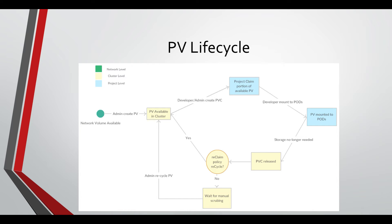Once you have this claim available in your project, you define the mapping by either defining a binding file for a single pod and running it, or by updating the deployment configuration to make this volume available to every pod restarted under that deployment. Once the application is done, you can delete the persistent volume claim, which releases the booked portion. This depends on the reclaim policy — either recycle or retain. With retain, the volume stays in the cluster and waits for manual scrubbing before becoming available again. With recycle, the volume immediately becomes available back to the cluster for another project to claim.